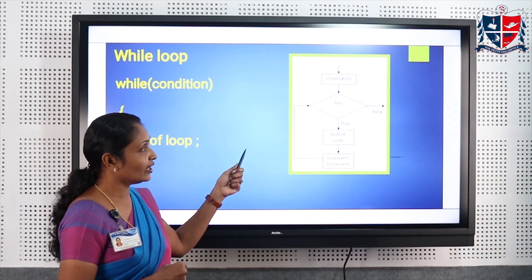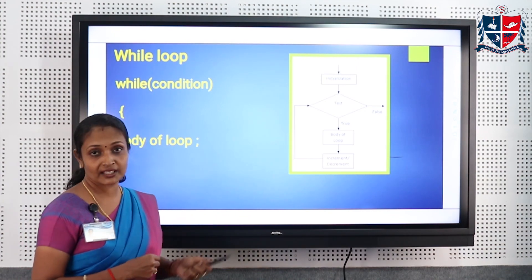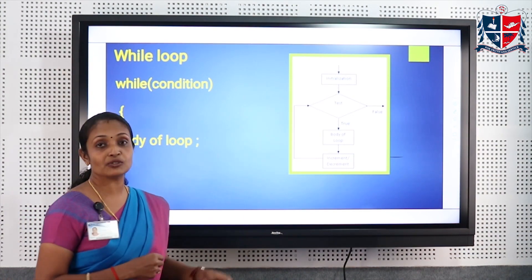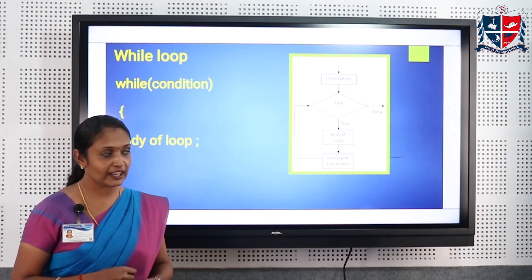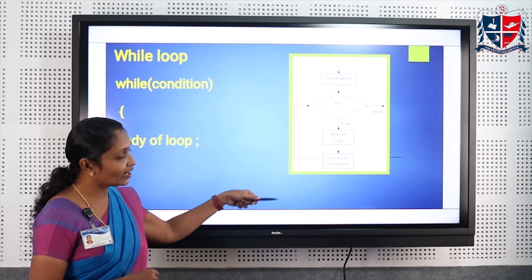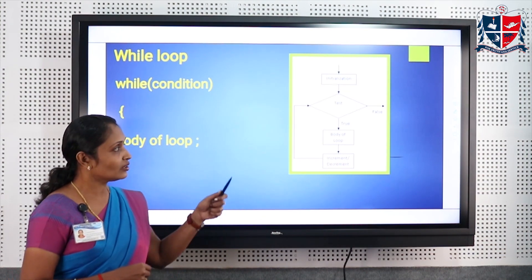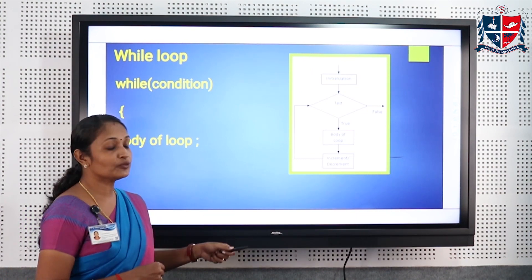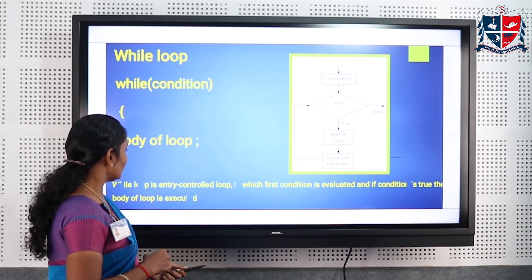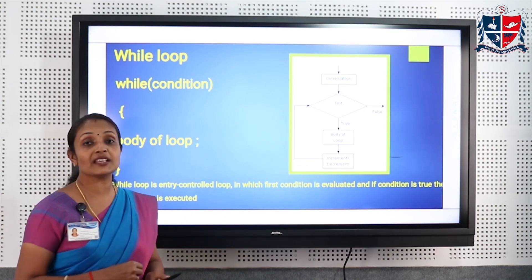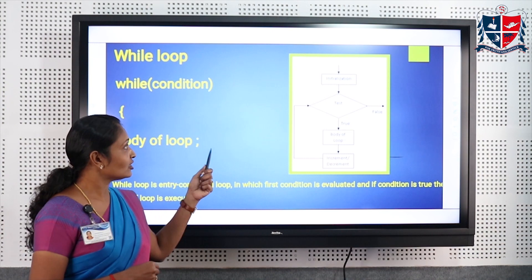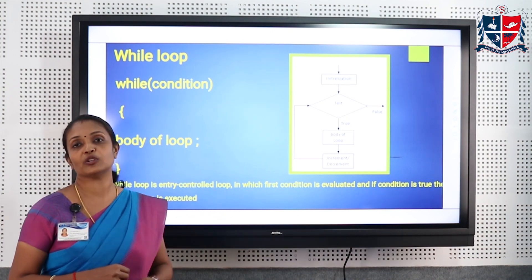We have to initialize the value of the variable, then check the condition. If the condition is true the body of the loop will be executed, and after that it will either increment or decrement the value. Again the condition will be evaluated, and if true the body of the loop will execute again. This process continues until the condition becomes false. The while loop is an entry control loop because the condition is evaluated at the starting of the loop.